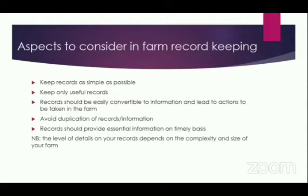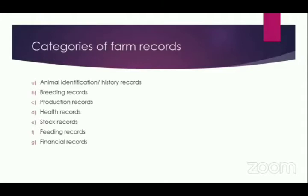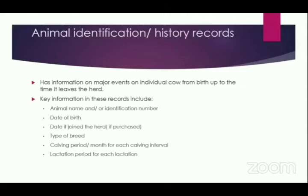Now that we know the aspects to consider in farm record keeping, let us go through a few categories of farm records. I have put them in around seven categories that we really need in our farm. The first category is identification and history records; we'll also look at breeding, production, health, stock, feeds and feeding records, and finally financial records — and why each category is important in our farm.